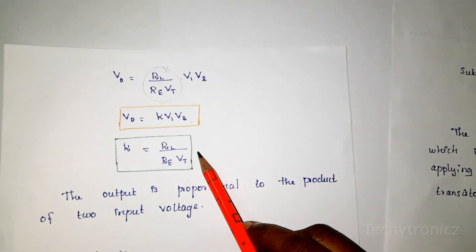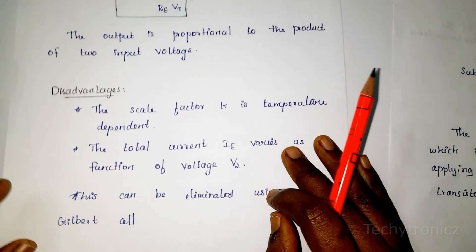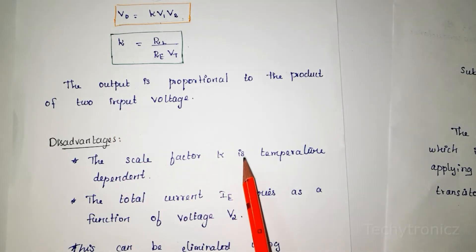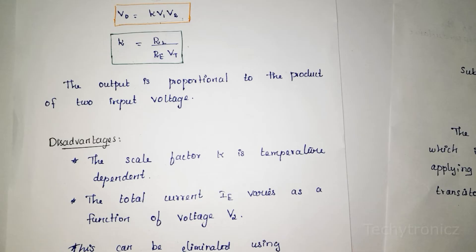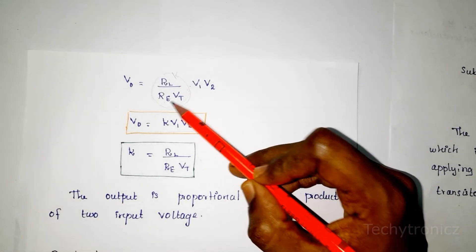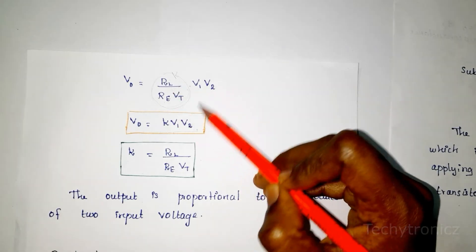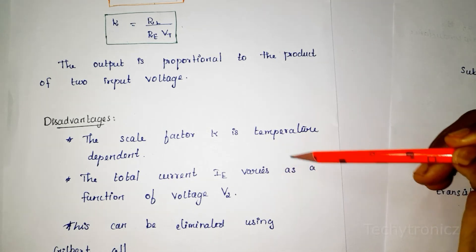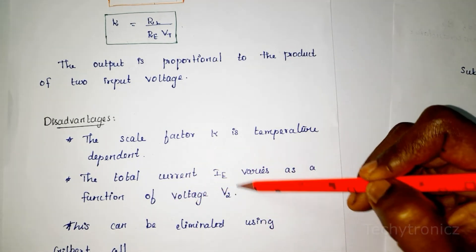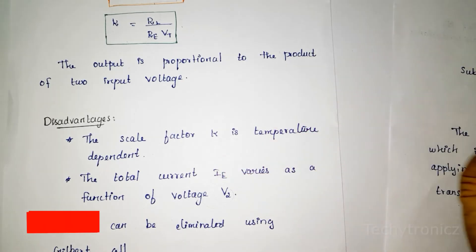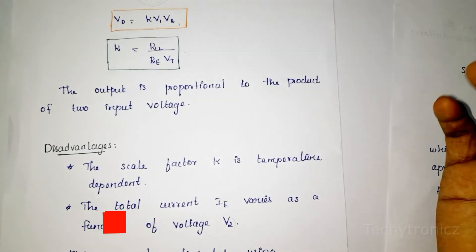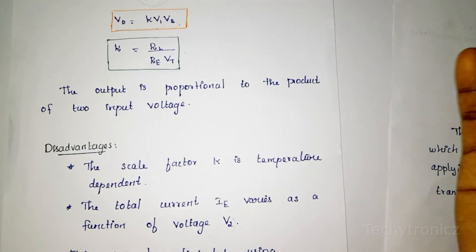However, the scale factor k equals RL divided by RE into VT, which is temperature dependent. Also, the total emitter current IE varies as a function of voltage V2. These are the drawbacks of this circuit. To eliminate these drawbacks, we use the Gilbert's multiplier circuit.